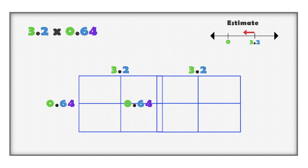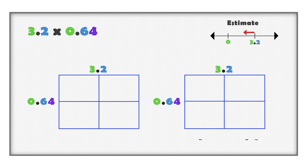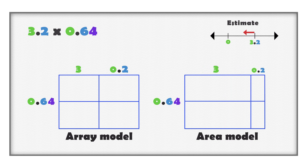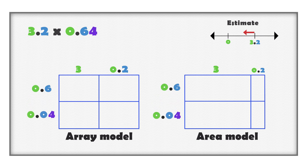To multiply these numbers, we organize the digits by place value. We have three and two tenths and sixty-four hundredths. In the area model, the length of three is longer than the length of two tenths. Sixty-four hundredths is the same as six tenths and four hundredths. The width of six tenths is longer than the width of four hundredths.